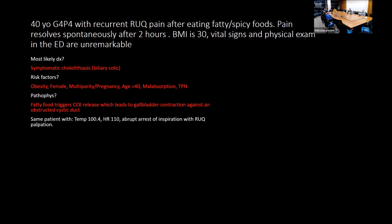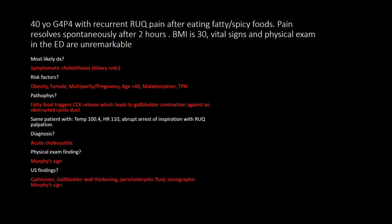A similar patient now presenting with low-grade fever, tachycardia, and abrupt arrest of inspiration with right upper quadrant palpation — that's Murphy's sign — suggests acute cholecystitis. Classic ultrasound findings include pericholecystic fluid, gallbladder wall thickening, gallstones, sludge, and a sonographic Murphy's sign.